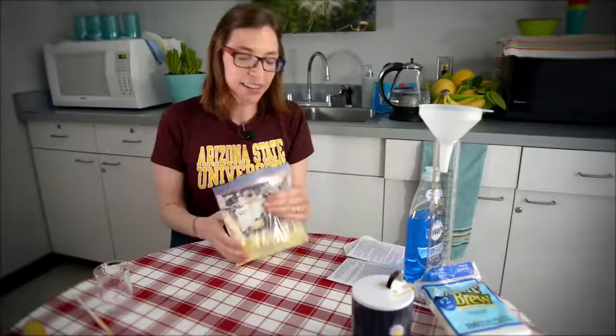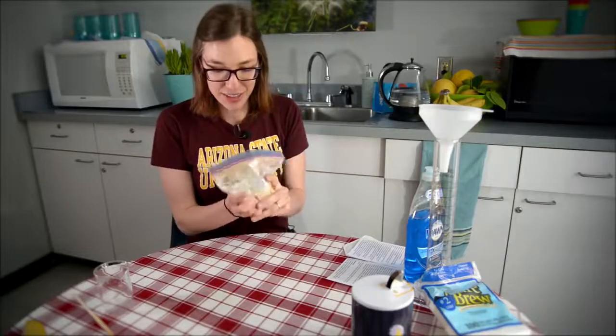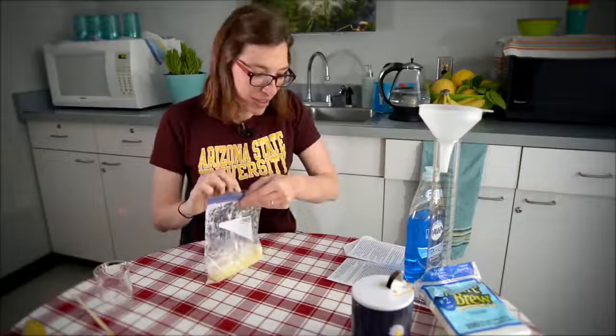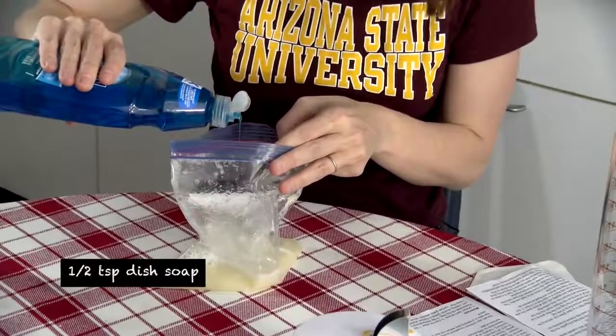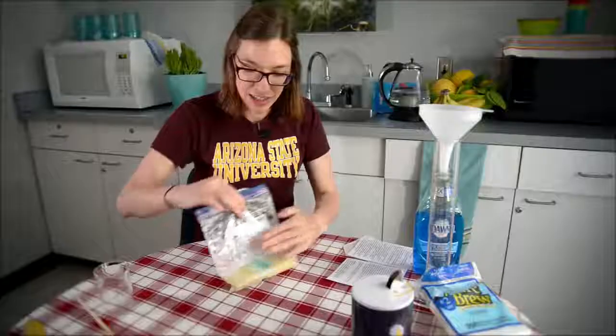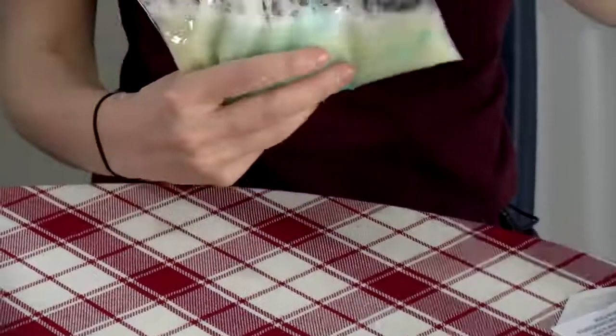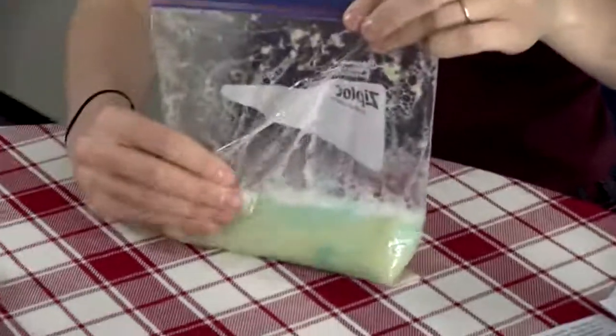And now we get to gently slosh it around. Okay, and here's the next step where you've got to be careful not to get it too foamy. We're gonna add a half a teaspoon of our dish soap. And now we want to gently, because now it's got the soap in it, it'll really get bubbly if we're too aggressive with it.